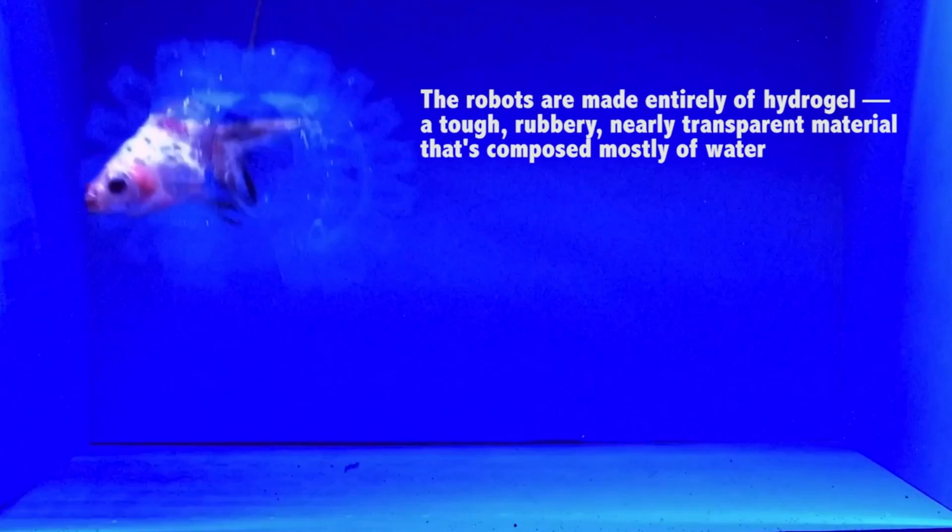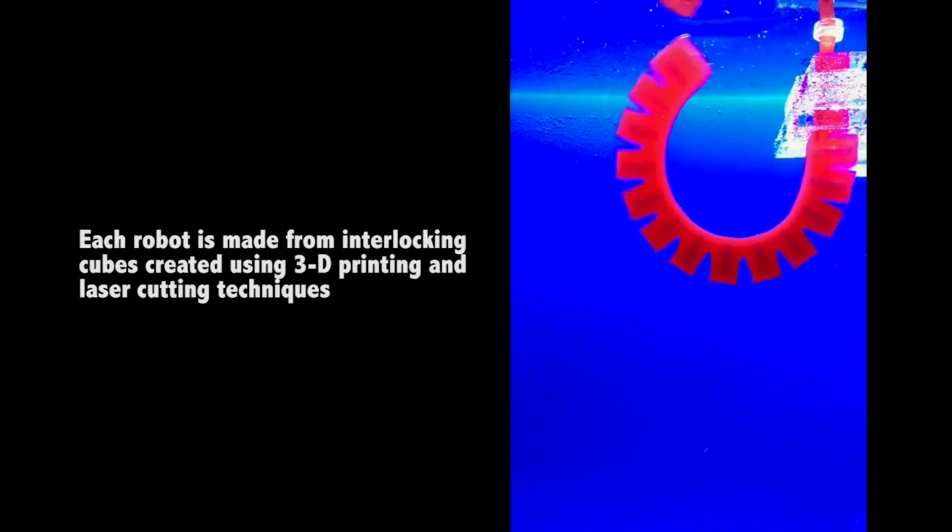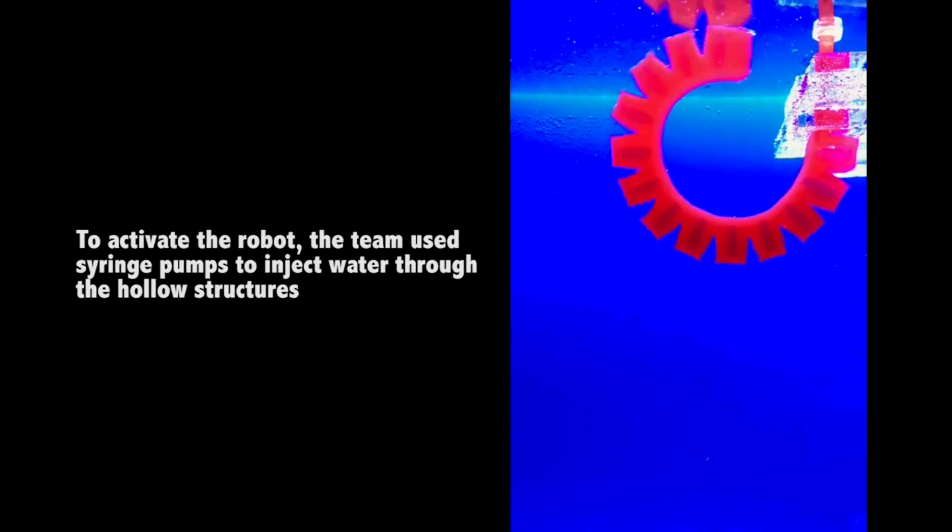The robots are made entirely of hydrogel, a tough, rubbery, nearly transparent material that is composed mostly of water. Each robot is an assemblage of hollow, precisely designed hydrogel structures connected to rubbery tubes.